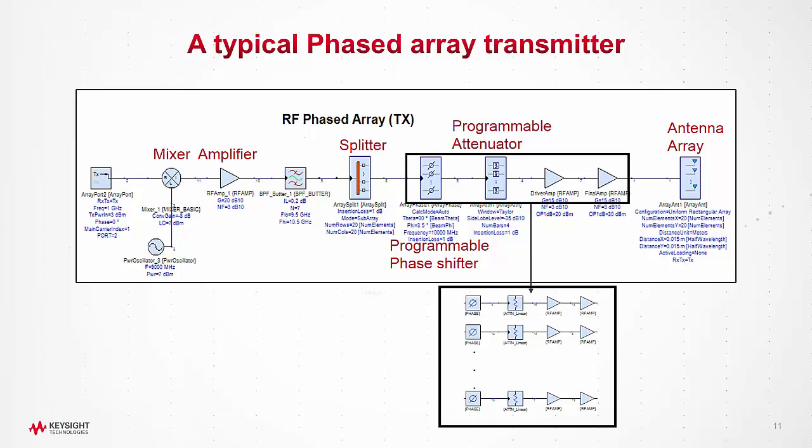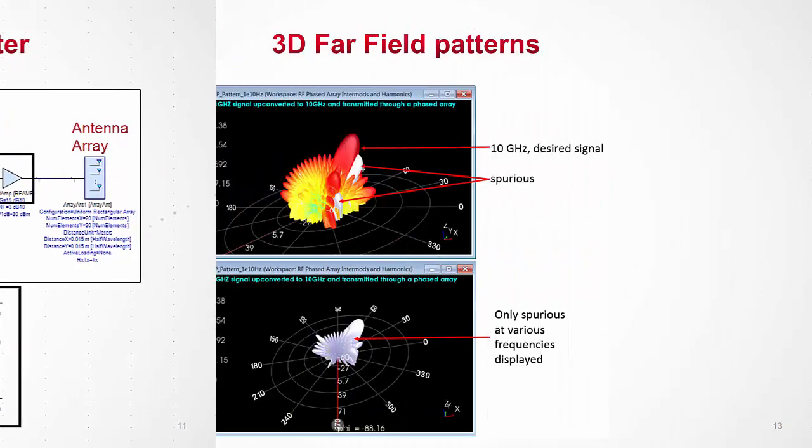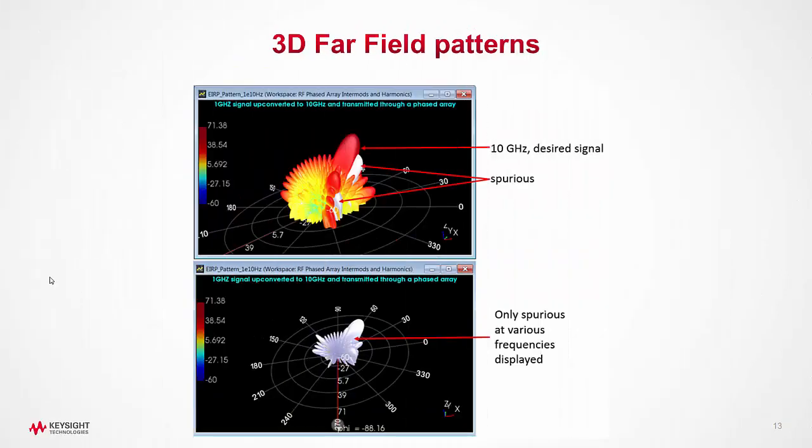Once simulated, we can plot three different intuitive graphs. Graph number one: EIRP plot in the far field. As can be seen in the block diagram, there can be various frequencies generated apart from the desired signal due to the non-linearities.